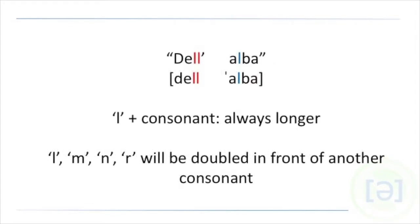So to go back to dell'alba, there we have a double L and then we have the LB and we also want to lengthen the L before the B. It's as though we say a double L twice because the letter L followed by another consonant can always be longer, can be tasted more. This goes for all of the voiced consonants L, M, N, and R. They can basically be doubled before another consonant.